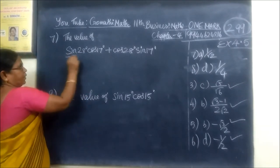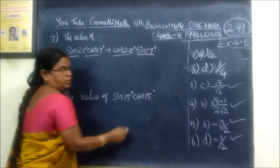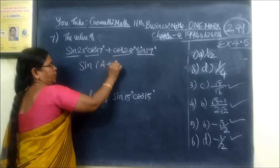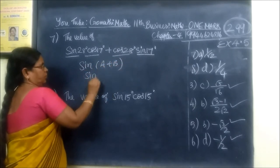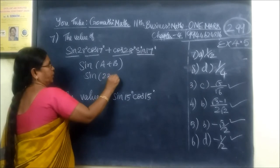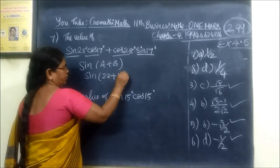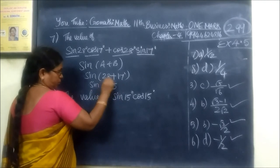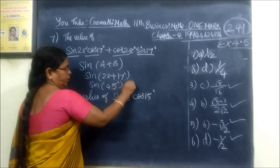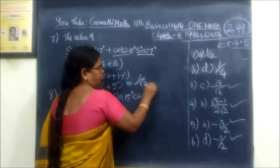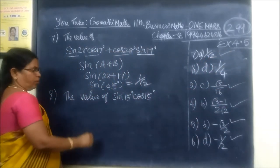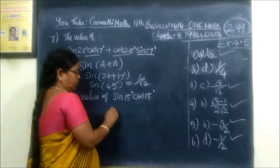This is the value of sin A cos B plus cos A sin B. Now you have to formula sin of A plus B. So that is equal to sin A minus 28, then B minus 17. This is 45 degree. What is sin 45? 1 by root 2. So this option is correct.